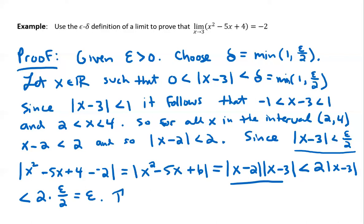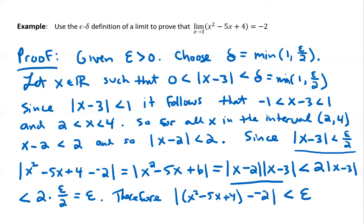Therefore, the original function minus the limit value must be less than epsilon. That's our proof — a little bit more complex than a linear scenario, but still doable. Alright, hope you have a good night. Let me know if you have any questions.